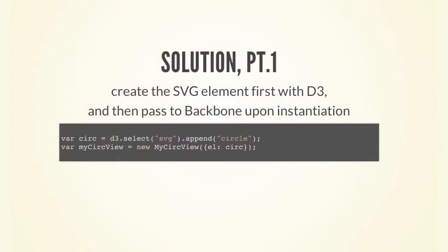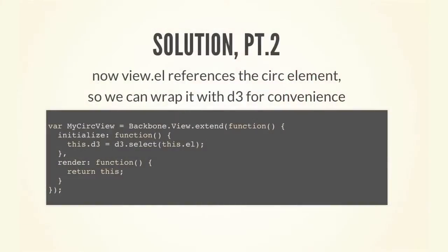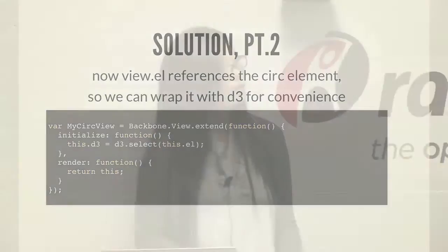My coworker came up with a solution that I really liked, which was to create the SVG element — the circle element — with D3 first. What D3 does when you try to append something is it not only appends it, but first creates it and namespaces it to SVG. Then you can pass that element into Backbone upon instantiation, and the view has a reference not only to the circle element, but if you decide to wrap it within D3, you have that for convenience also. I was really happy and excited because I got something to work.